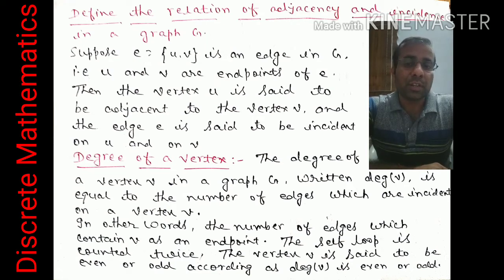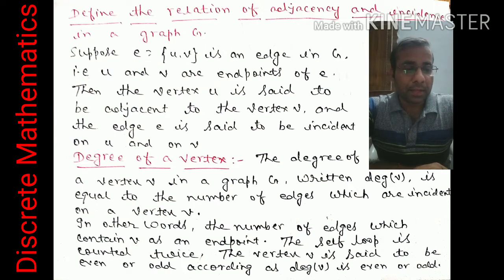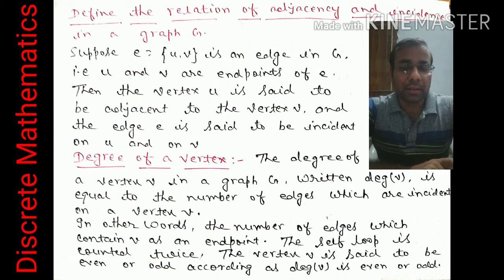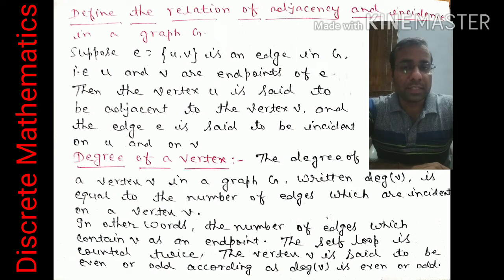For example, if we have three points u, v, w and v is connected to u and w is connected to u, then the degree of u equals the number of connecting edges. A self-loop is counted twice when calculating the degree of a vertex. So if u has a loop and is also connected to v and w, then deg(u) = 2 (loop) + 1 + 1 = 4.